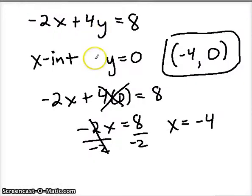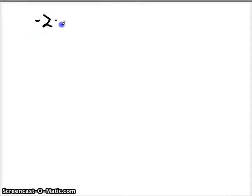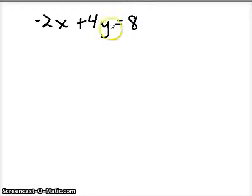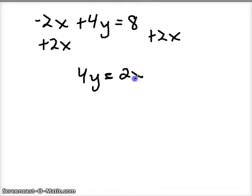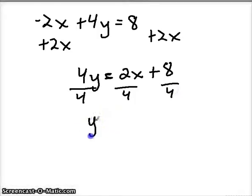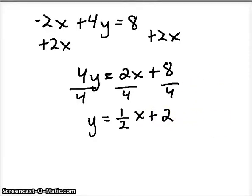Now let's double-check our work, just to make sure we did it right. I'm going to rewrite our equation and organize it in slope-intercept form. If I want to solve for y, I'm going to add 2x to both sides, which leaves me with 4y equals 2x plus 8. To get y by itself, I divide each term by 4. That leaves me with y equals one-half x plus 2. Let's check that on our graph and see what happened.